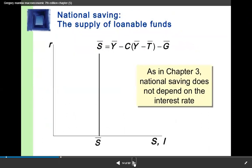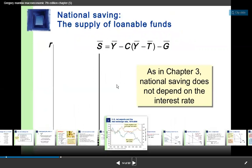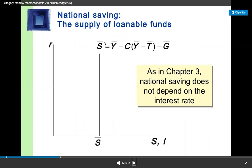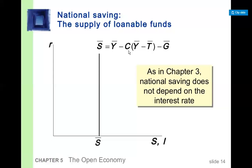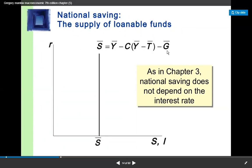Now we are going to look at the saving function. When you have income, you subtract private consumption and public consumption — where G bar is public government expenditure — and what remains is your saving. The saving function includes private consumption and public consumption.